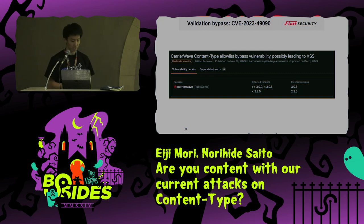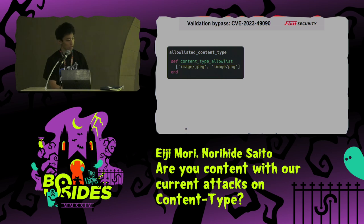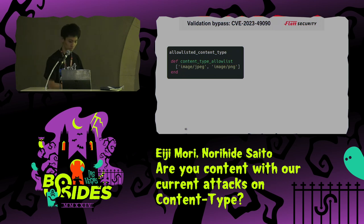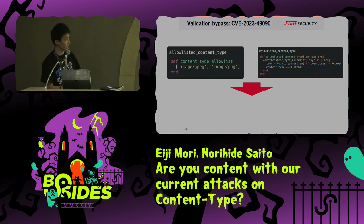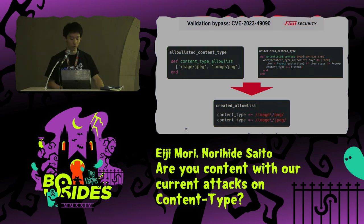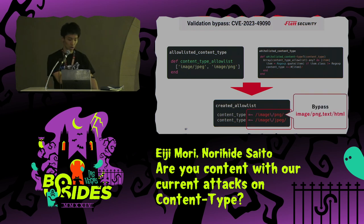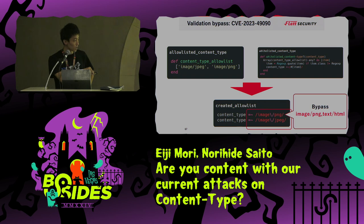This vulnerability has been fixed at this time. This is an allow list for content type — for example, you can see image/JPEG and image/PNG only. This is a logic to generate a regular expression based on that allow list. CarrierWave concatenates the two values. In other words, a content type regular expression is generated from the final allow list. However, this can be bypassed — for example, you can bypass with image/PNG,text/HTML.